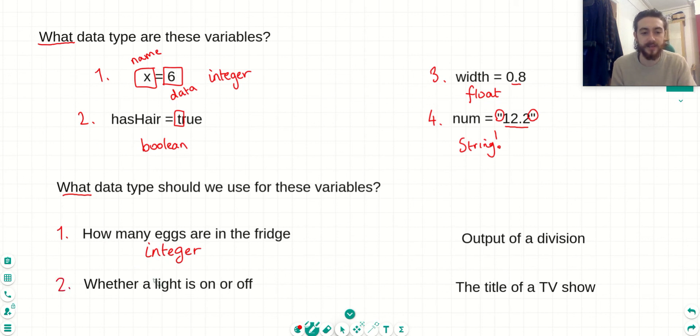The second example, we want to know, we want a variable to tell us whether a light is on or off. Well, as you can see here, we have two possible options, which means we should be using a boolean because on is like true and off is like false.